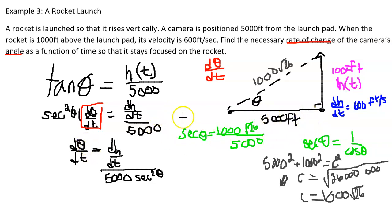So I'm going to start with the 1000 and 5000, which should simplify to one fifth. And so we're left with the square root of 26 squared over 5 squared.